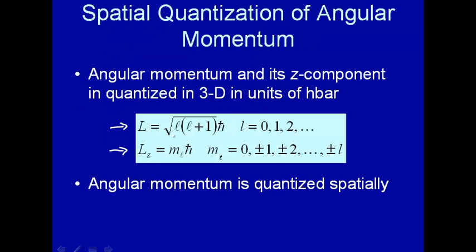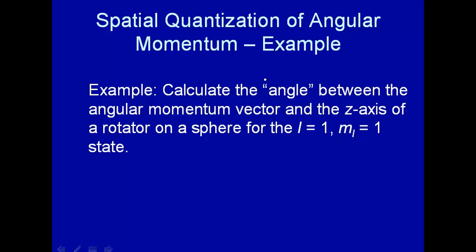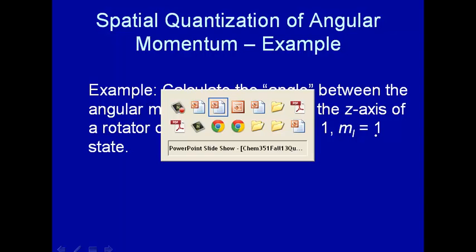Alright, so let's do sort of a pseudo-problem. Calculate the angle, and I put that in quotes because quantum mechanics is kind of fuzzy and we're thinking about not all of this is well defined vectors and so on, but let's nonetheless do that to get the point across. Calculate the angle between the angular momentum vector and the z-axis of a rotator on a sphere for the L=1, m_L=1 case.